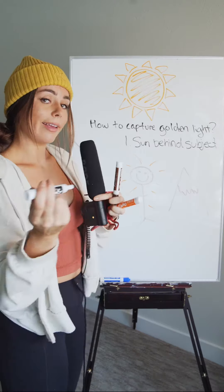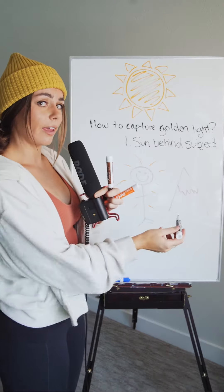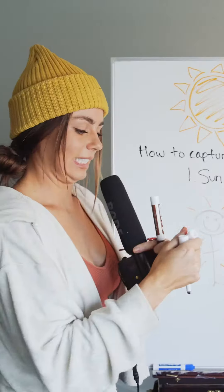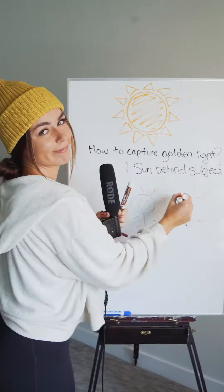Today's episode of Photography with Paige: how to capture golden light and we're gonna edit some golden tones. When the Sun is behind your subject, it's gonna illuminate the background.